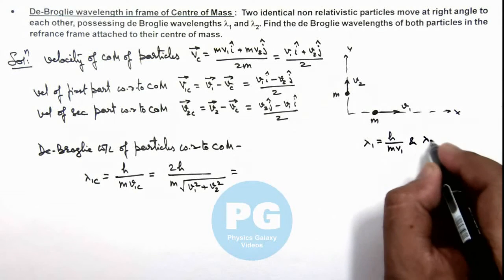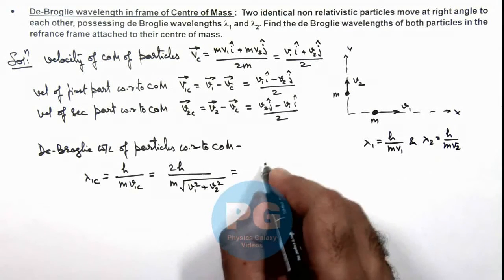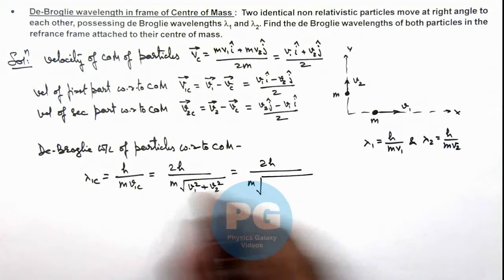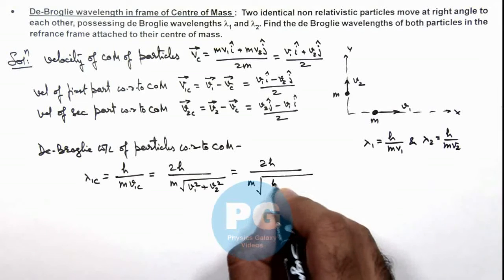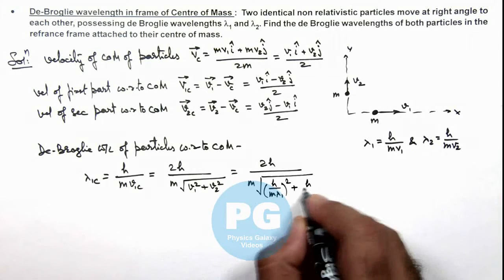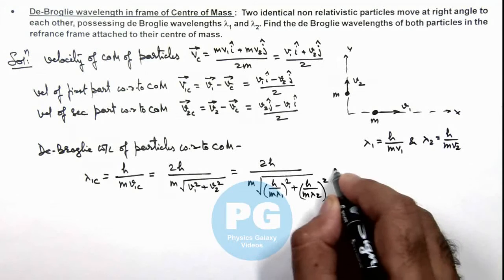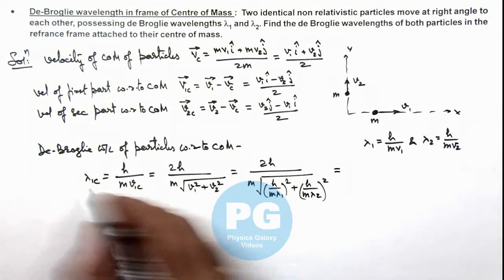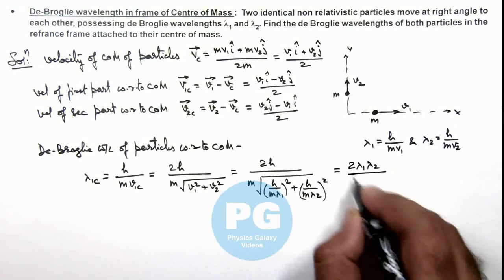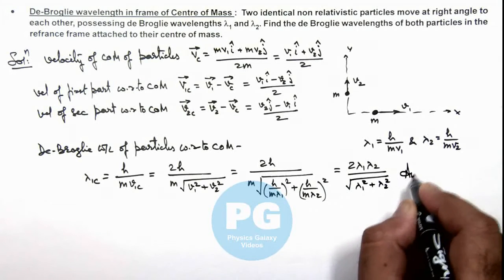Substituting, lambda_1c = 2h/m divided by the square root of (h/(m*lambda1))² + (h/(m*lambda2))². On simplifying, this gives lambda_1c = 2*lambda1*lambda2 divided by the square root of (lambda1² + lambda2²). This is the first result of the problem.